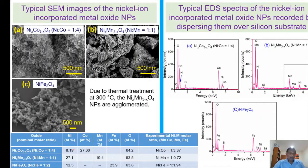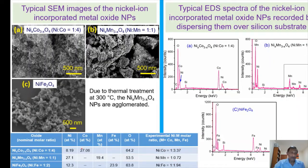When we estimated their composition from EDS, in the case of nickel cobaltite with a 1:4 nickel-to-cobalt ratio, we obtained an estimated ratio of 1:3.37. In the case of nickel manganite 1:1, we got 1:0.72. For nickel ferrite with a nickel-to-iron ratio of 1:2, we got 1:1.94 — pretty close. However, in the earlier two cases the ratio is not so close to their nominal values, which may be due to the overlapping of nickel/cobalt and nickel/manganese/oxygen peaks making the estimation imperfect.